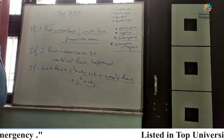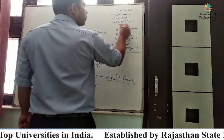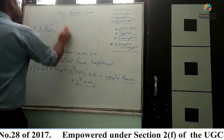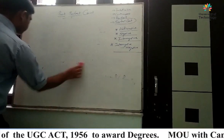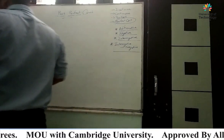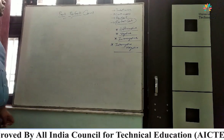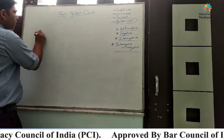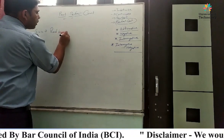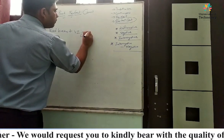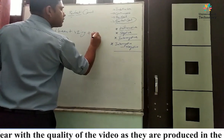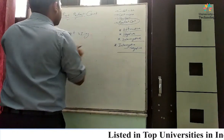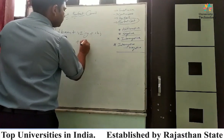Now let's talk about past perfect continuous. The syntax is: subject plus had been plus verb first form -ing plus object plus since/for. For example: 'Bachche do ghante se khel rahe the' — Children had been playing cricket for two hours.